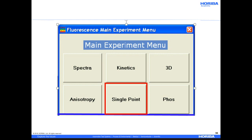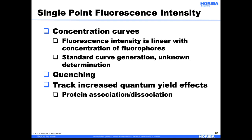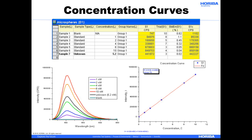Next, we will discuss fluorescence single point measurements. Because fluorescence intensity is linear with the concentration of a fluorescent molecule, standard concentration curves can easily be generated and used to determine concentrations of the same molecule in an unknown sample. This is useful in quenching experiments where additives decrease the intensity of the fluorophores in a systematic way. Concentration curves can also be created to study how other molecules interact with proteins, and can be used for tracking protein structural changes systematically. As an example, here is a calibration curve of a known set of fluorescent microspheres or beads. Five known concentrations were used to create the standard curve, which was then fit and used to calculate the concentration of beads in an unknown solution.